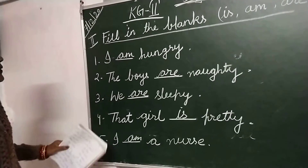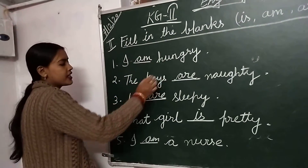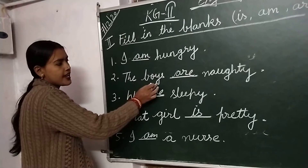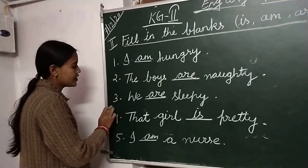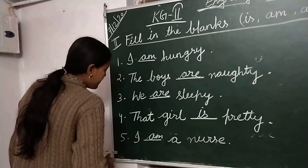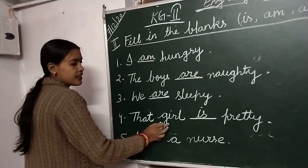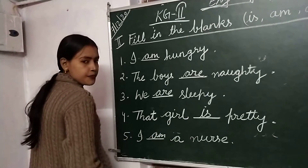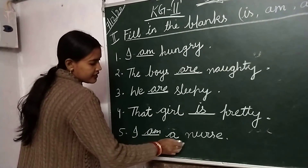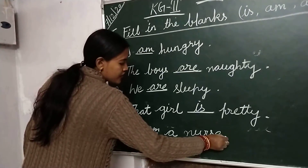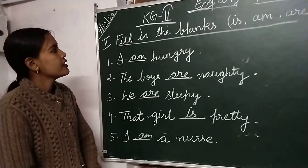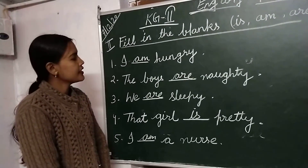Once again repeat: 1. I am hungry. 2. The boys are naughty. 3. We are sleepy. 4. That girl is pretty. 5. I am a nurse. So children, write down your English writing copy neat and clean.